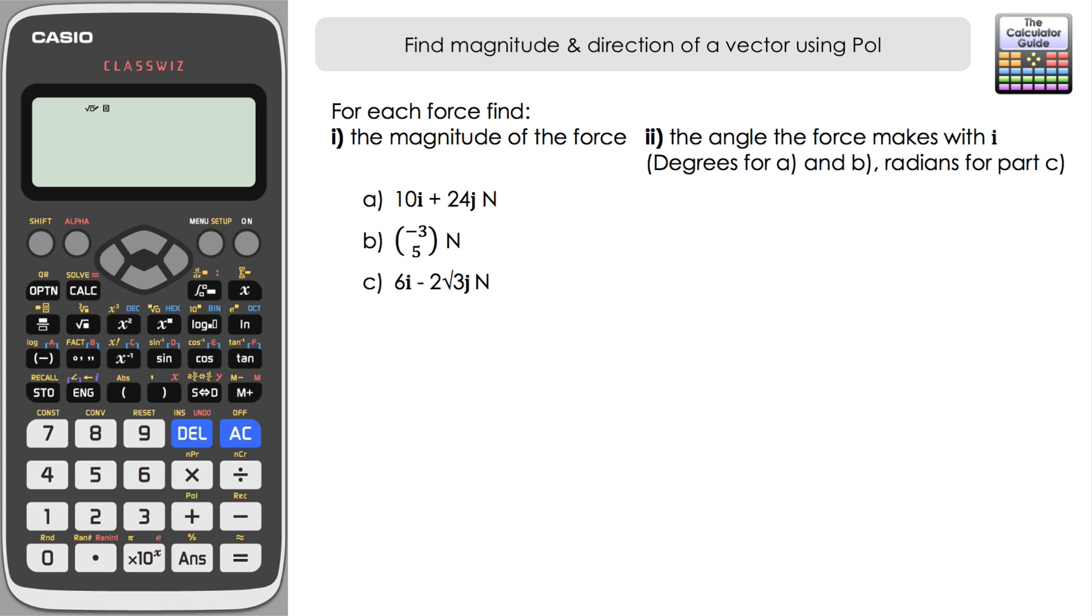But there is a secret trick that we can use it for as well which is calculating the magnitude and direction of a vector and get both results straight away. Let's take a look at the questions that we've got here.